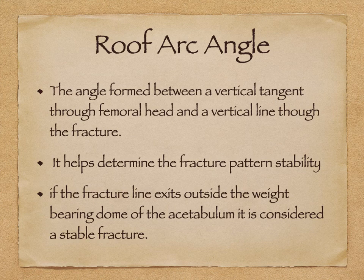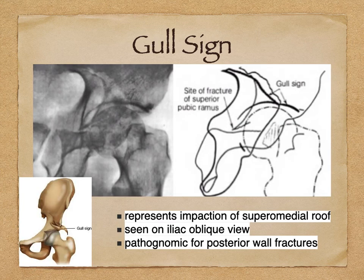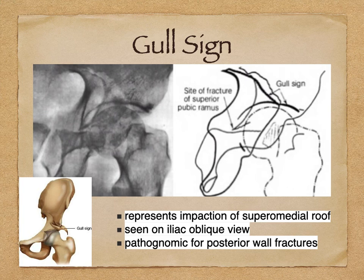Apart from the roof arc angle, there are two signs that are important. One is the gull sign - it represents the impaction of the superior medial roof. It is typically seen on the iliac oblique view and is pathognomonic of posterior wall fractures.